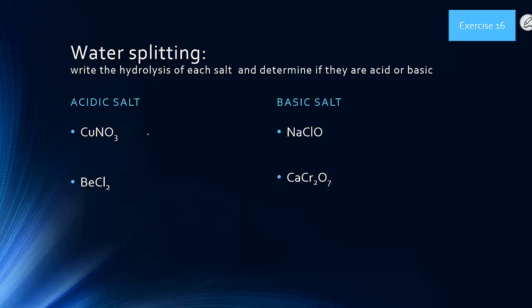To do this, look at the anions and cations of the salt. For copper nitrate: the anion nitrate had to have come from nitric acid, while the cation copper had to have come from copper hydroxide, which is weak — it's not a group 1 or group 2 metal hydroxide. Nitric acid is a strong acid; it's one of the six we memorize: nitric, sulfuric, perchloric, and all the halides with the exception of hydrogen fluoride. So we say this is an acidic salt.